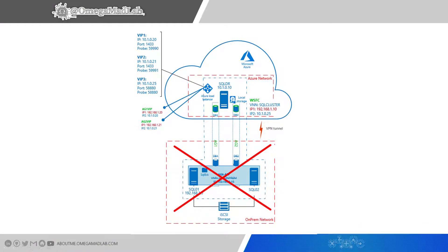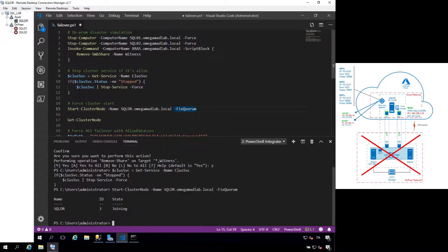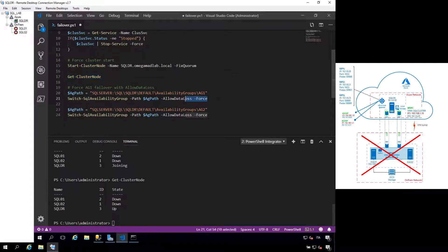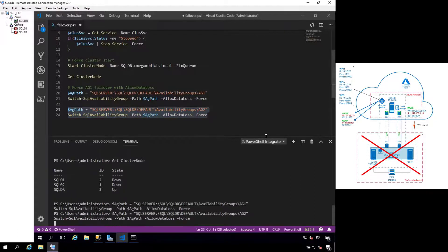To recover from this disaster, we need to force the failover of the Availability Groups on the secondary disaster recovery node distributed in Azure. We first need to be sure the cluster service on the DR node is stopped, so we stop it. Then we force the cluster service start with the fixed quorum switch and wait for the service to come up. We are then ready to forcibly failover the Availability Groups through the DR node — the first Availability Group is done, and now the second Availability Group is failed over as well.